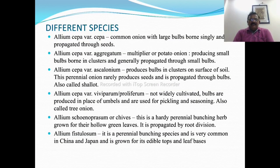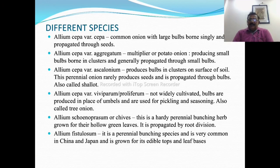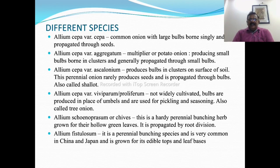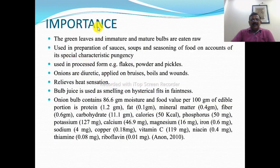The next species is Allium schoenoprasum or chives, a hardy perennial bunching herb grown for their hollow green leaves and propagated by root division. Allium fistulosum is a perennial bunching species very common in China and Japan and is grown for its edible tops and leaf base.